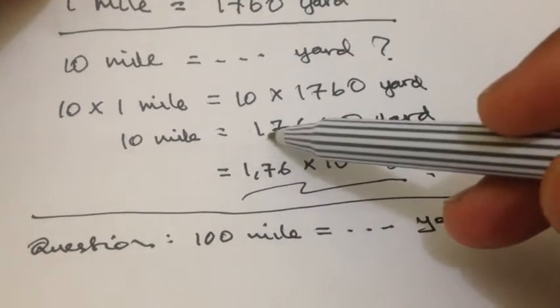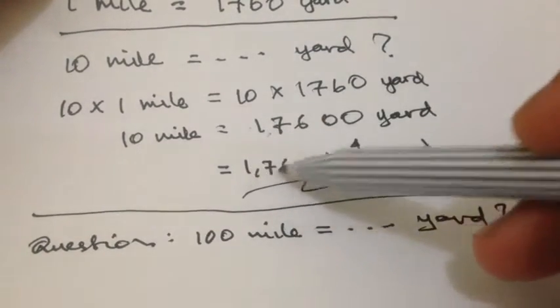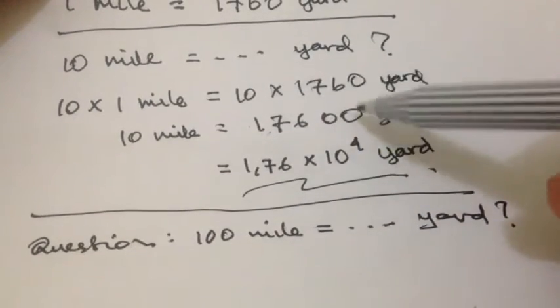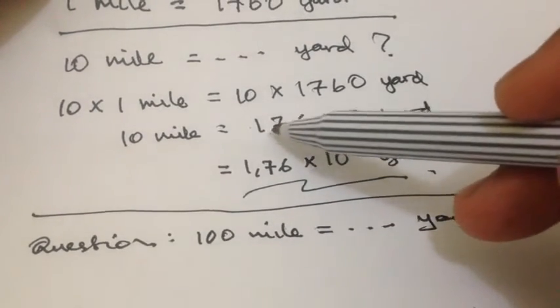So we just put this comma like this, and then we multiply it by 10 to the power of 1, 2, 3, 4—however many numbers are after the comma.